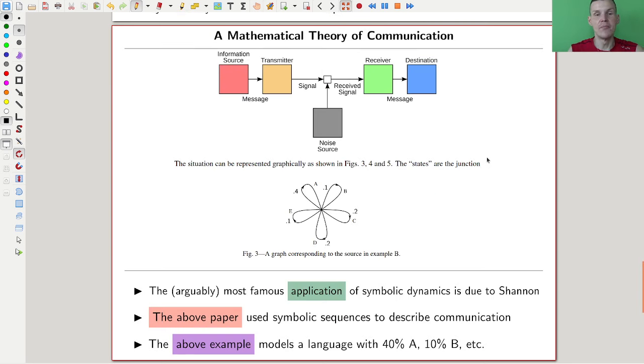The most famous example of symbolic dynamics, by far the most famous example, is a paper by Shannon, which pioneered the mathematical theory of communication. Shannon used a lot of techniques from symbolic dynamics, essentially giving birth to that field. Not quite, there was some work before, but this paper was just so influential and important. In our computer age, having a mathematical theory of communication is just really important.